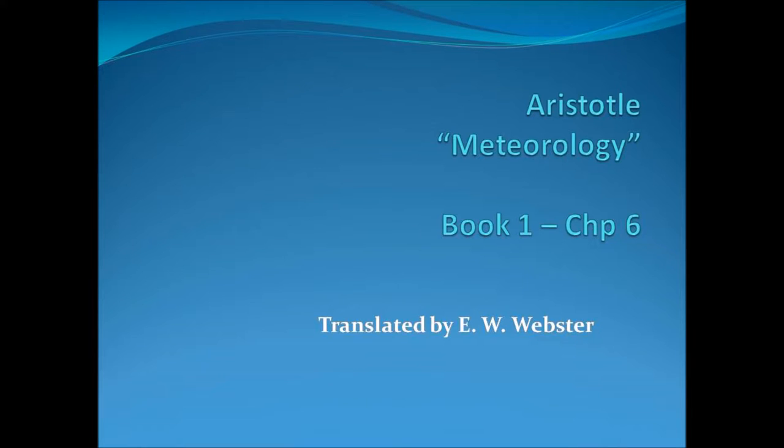These views involve impossibilities, some of which are common to all of them, while others are peculiar to some only. This is the case first with those who say that the comet is one of the planets. For all the planets appear in the circle of the zodiac, whereas many comets have been seen outside that circle.